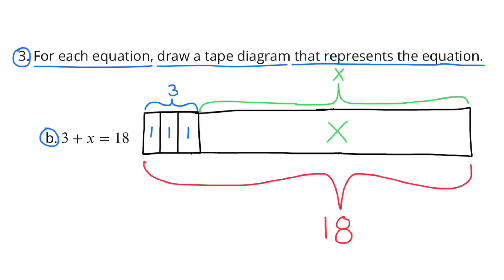Problem B: 3 plus x equals 18. You can see in my tape diagram that I have 3 small sections and one larger section to represent x. So those 3 small sections plus the larger x section equals 18. One way to figure out the value for x is 18 minus 3. And 18 minus 3 is 15. So we know that that larger section, x, is worth 15.